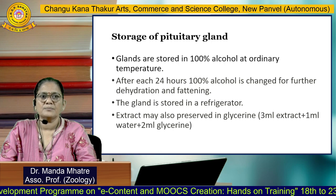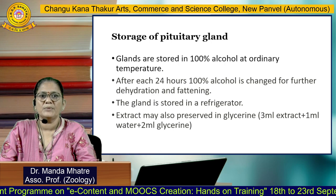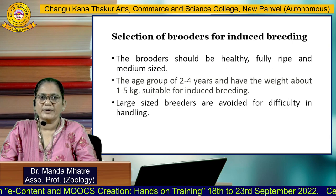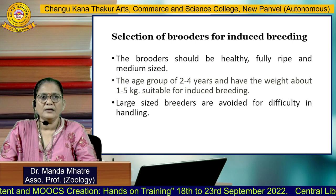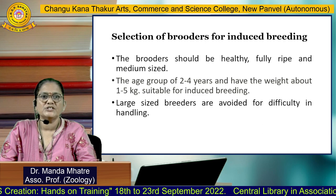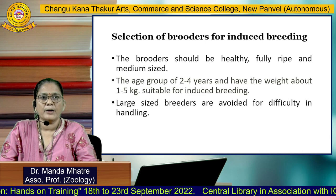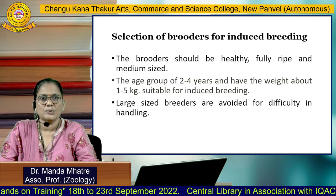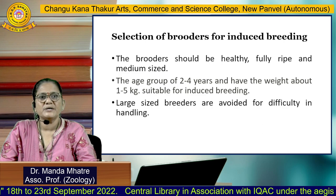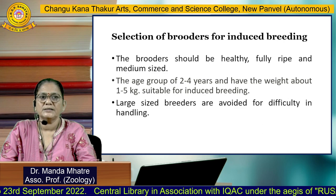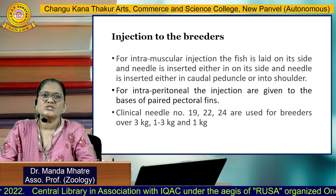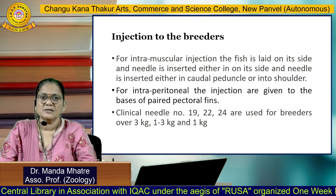Selection of brooders for induced breeding: the brooders should be healthy, fully ripe, and medium-sized. The age group of the fish should be 2 to 4 years, and weight should be about 1 to 5 kg to be suitable for induced breeding. Large-size breeders are avoided due to difficulty in handling.